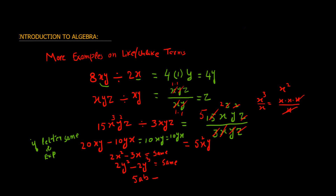One more example — another common source of error: 5ab minus ba. Now ba and ab are the same, just like yx and xy. The term ba has an implied coefficient of 1 — if no coefficient is visible, it is 1. So 5 minus 1 is 4, and the answer is 4ab (or 4ba — it doesn't matter).